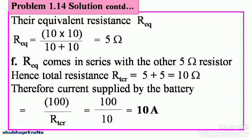When Rc comes in parallel, the equivalent resistance Req is 10×10 divided by 10+10, which gives you 5 ohms. Now Req comes in series with the other 5 ohm resistor, the one you saw at the very beginning. Hence total resistance Rtcr equals 5+5, and that gives you 10 ohms.